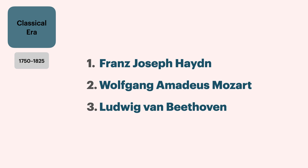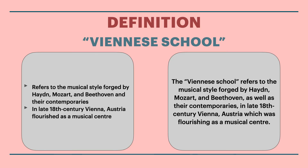The big three of the Classical era are Haydn, Mozart, and Beethoven, and these three form what's known as the Viennese School. The Viennese School refers to the musical style forged by Haydn, Mozart, and Beethoven, as well as their contemporaries in late 18th century Vienna, Austria, which was flourishing as a musical center. We'll study each of these composers in a lot more detail throughout this module.